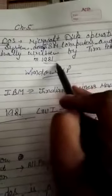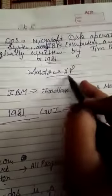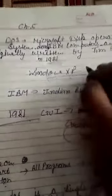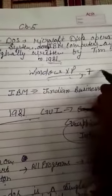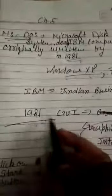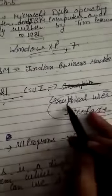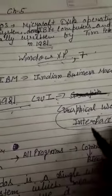Examples of operating systems include Windows XP and Windows 7. In 1981, GUI — Graphical User Interface — was introduced. GUI stands for Graphical User Interface, meaning the system is operated through a graphical display.